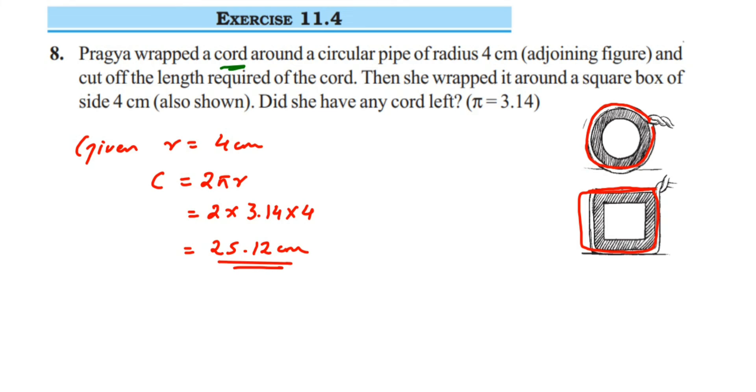That much cord she has used because she's wrapping around the circular pipe. Now let us find out the perimeter of the square box. Since we have the side given, side is equal to 4 centimeters. In that case, perimeter is equal to - this is about the square, so perimeter of square is 4 into side, which is equal to 4 into 4, which is equal to 16 centimeters.